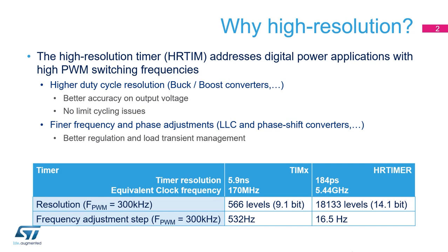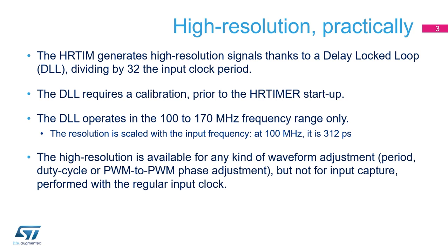The table presents the differences between standard and high-resolution timer for a product running at 170 MHz for both the duty cycle and the frequency resolution. The high-resolution is implemented using a delay-locked loop, or DLL, which allows the division of the timer input clock period into 32 fractional steps. This DLL requires calibration prior to the HR timer startup. It must be noted that the DLL only operates between 100 and 170 MHz, yielding a resolution ranging from 312 picoseconds down to 184 picoseconds, as the resolution is scaled with the input frequency.